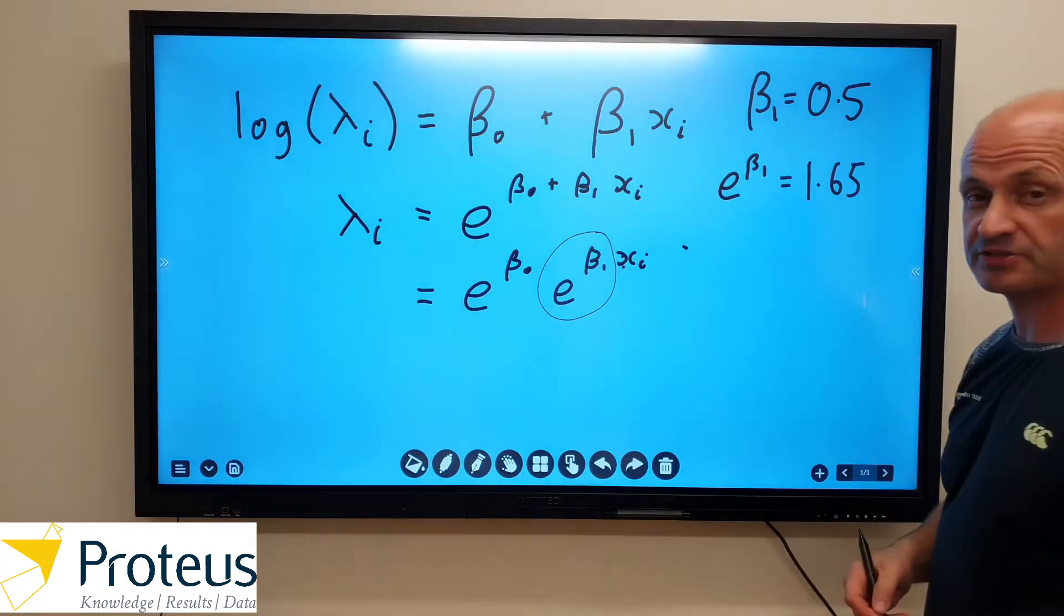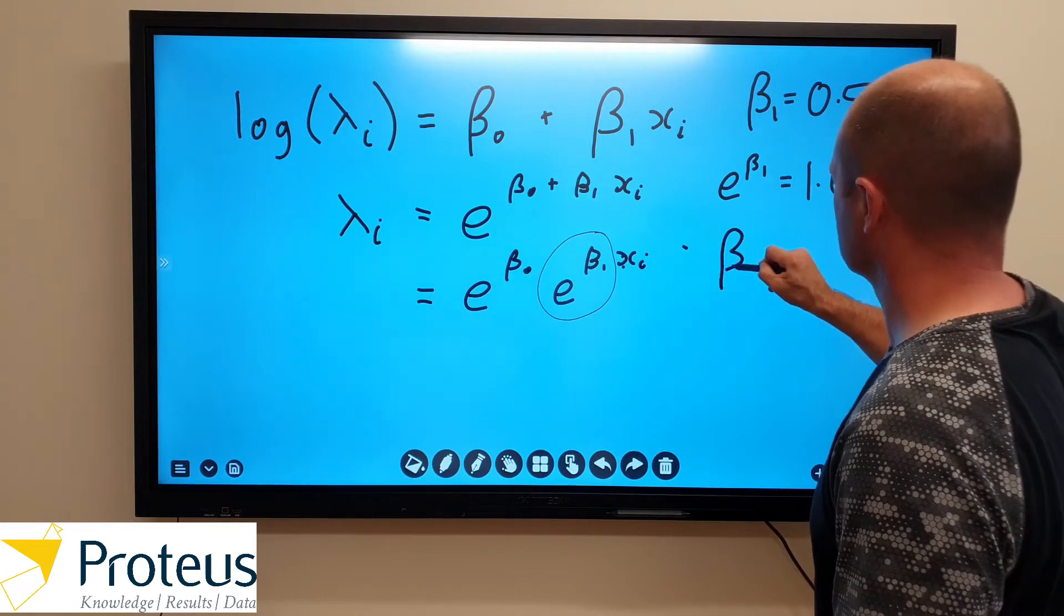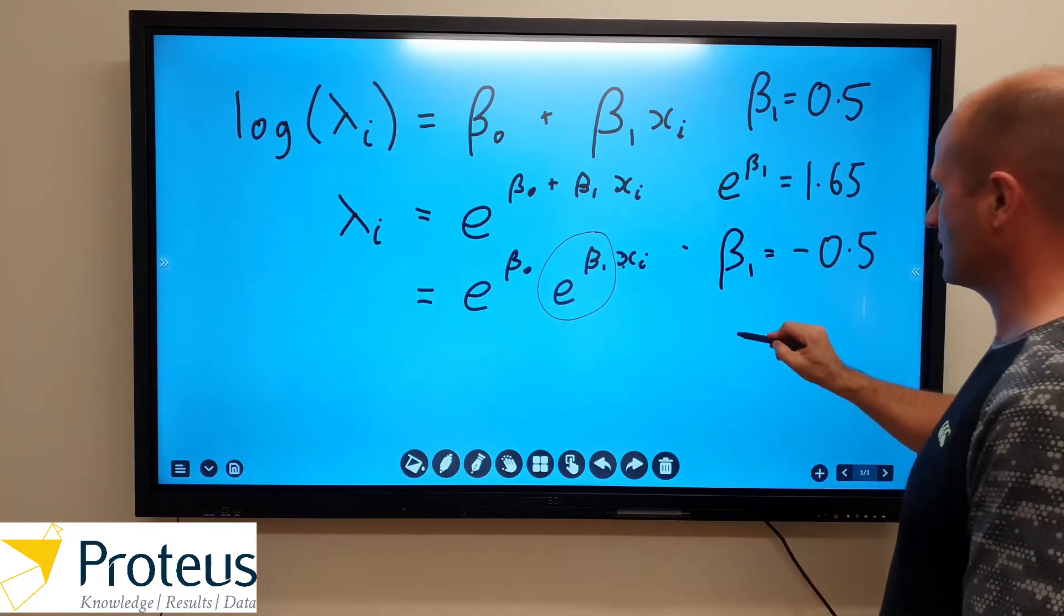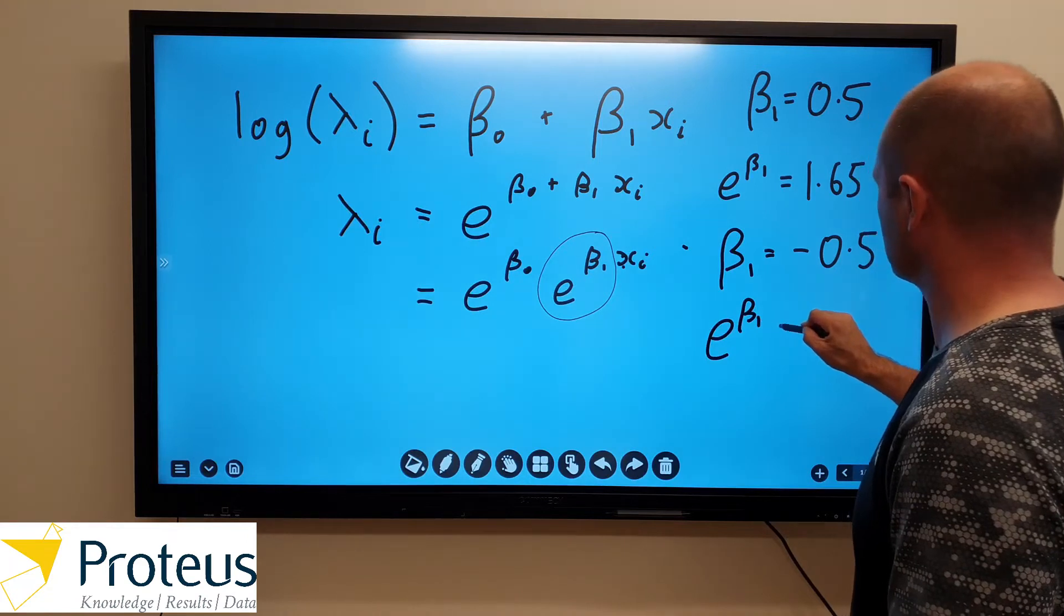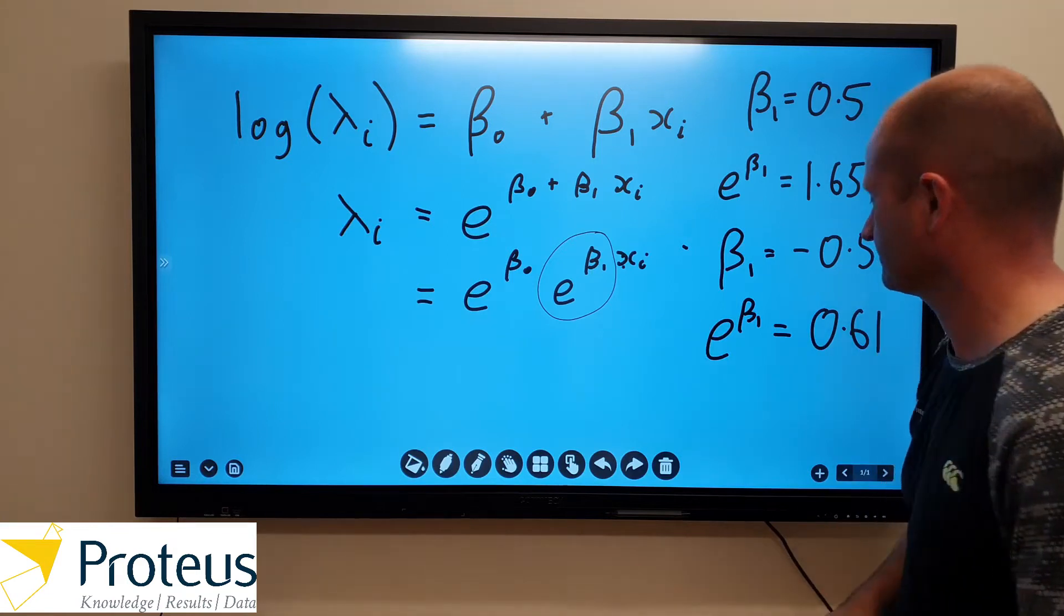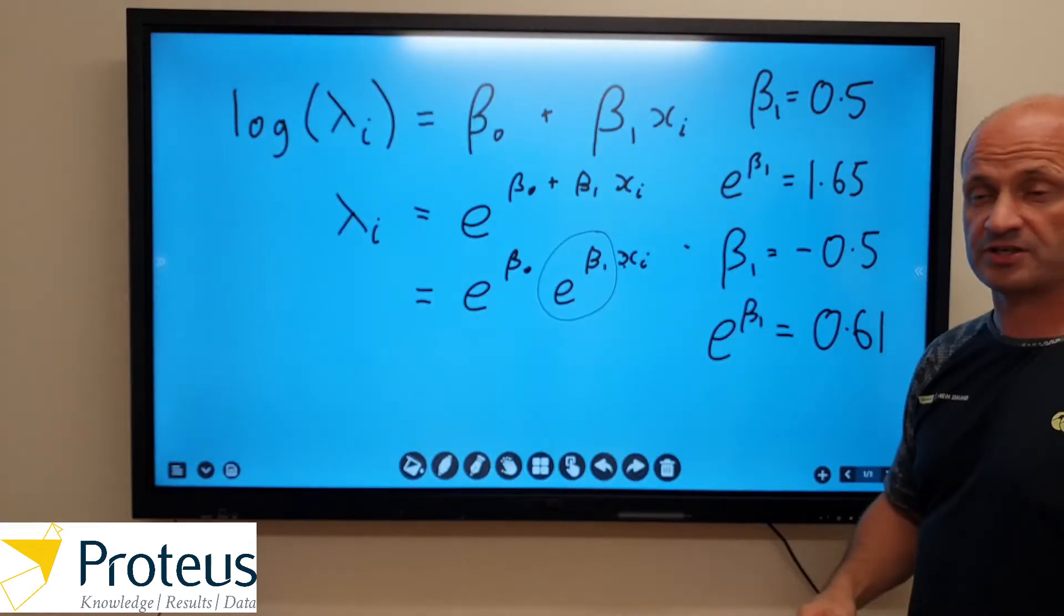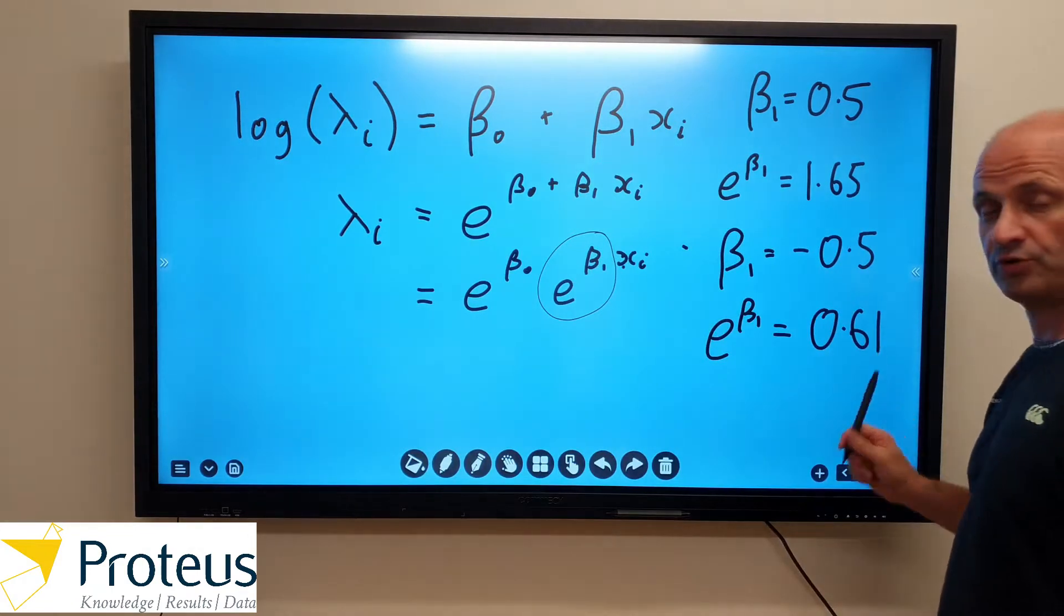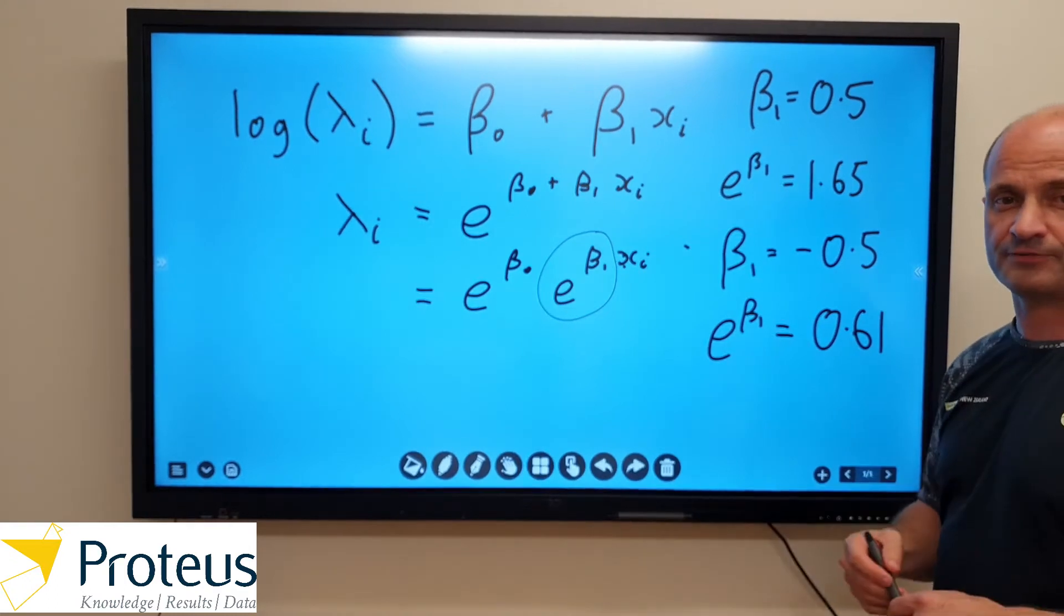Alternatively, suppose beta 1 equals negative 0.5, then our interpretation of that would be 0.61. So that's suggesting that as the value of x increases, then our rate parameter will actually decrease by a factor of 0.61. Alternatively, that's a percentage drop of 39 percent.